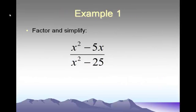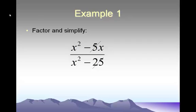Now we get into actually working on a rational expression and how to simplify it. Many students will look at a fraction like this one, see x squared on top and x squared on bottom, and just try to cancel those out. You cannot cancel the x squareds in this kind of problem, because the x squared on top is married to the negative 5x, and the x squared on the bottom is married to the negative 25. You also can't reduce the 5 and 25 — those terms are bound by their subtraction signs and you cannot break into those marriages.